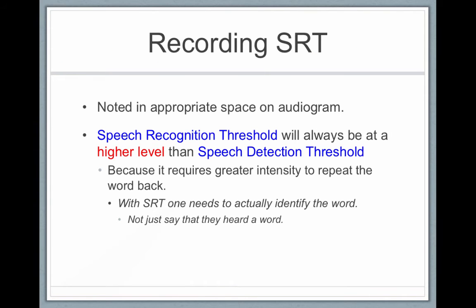You can record both the SRT and the SDT on a person's audiogram. Note that the speech recognition threshold will be a higher number than the speech detection threshold, because it's harder to recognize a word than to detect one. For example, a person might detect speech at 5 decibels but not recognize the word until it's at 10 decibels.